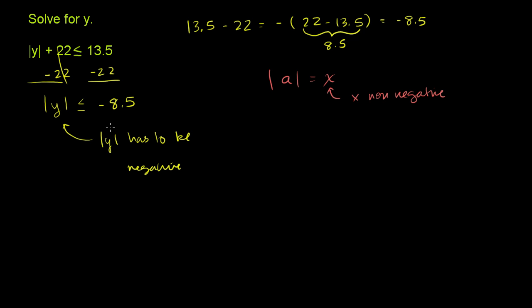We know that you take the absolute value of anything, you're going to get 0 or positive number. You're going to get a non-negative number. There is no number you can put here whose absolute value is going to give you a negative number, especially one less than negative 8.5. So there is no solution to this problem. You cannot find a y that will satisfy this. No solution.